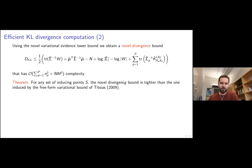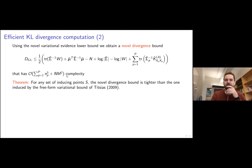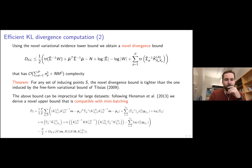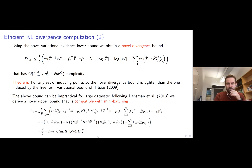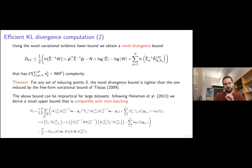Following the approach of Hensman 2013, we derive an upper bound compatible with minibatch-based stochastic gradient optimization. The bound can be written as a sum over individuals, so we can minibatch over individuals — assuming there are relatively many subjects in the study and the length of the time series for each subject is small. This provides a direct way of doing minibatch-based stochastic inference.